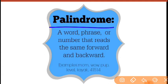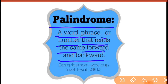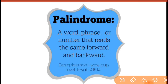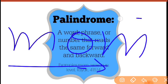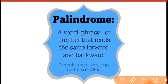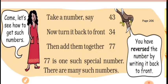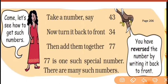Palindrome ka matlab kya hota hai — is mein numbers bhi aate hain, words bhi aate hain, phrases bhi aate hain, sentences bhi aate hain. So, a palindrome is a word, phrase, or number that reads the same forward and backward. Examples include: dub, mom — m-o-m left to right is 'mom', right to left is also 'mom', same to same. There are palindrome numbers too. Now let's see how to make such a number.